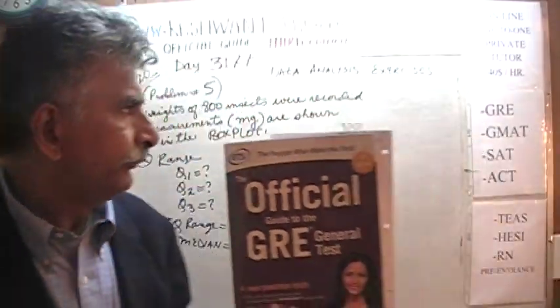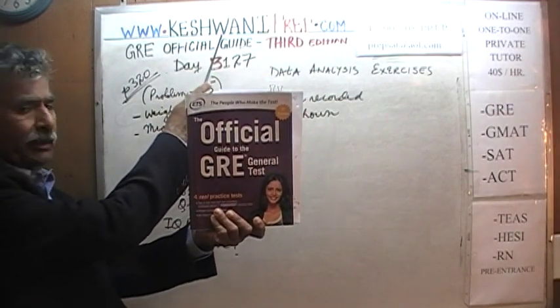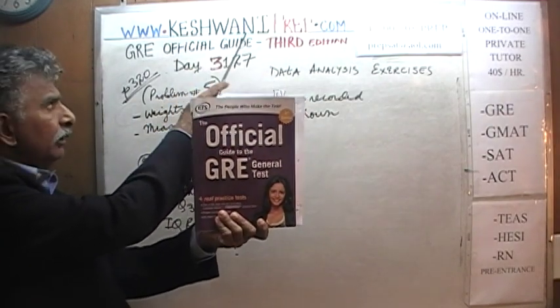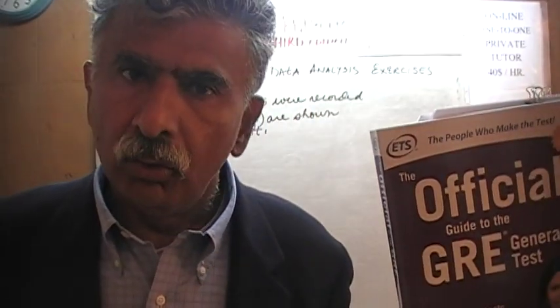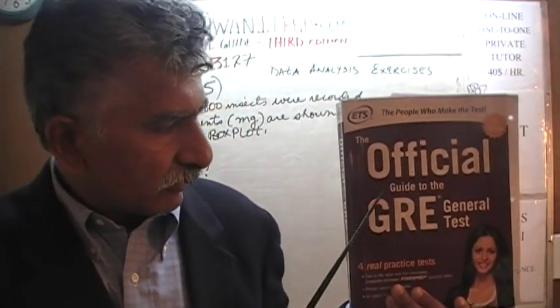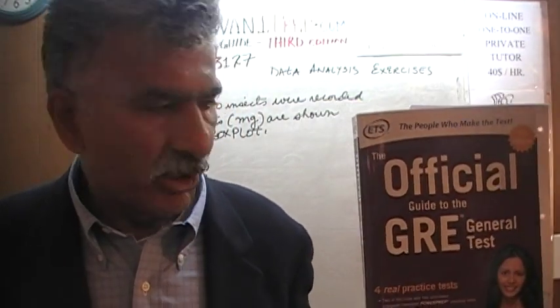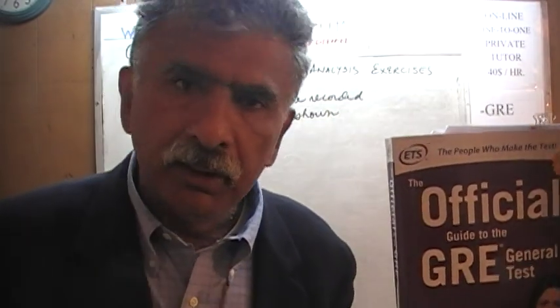Hello, my name is Keshwani — that's K-E-S-H-W-A-N-I, Keshwani. We are here because we want to prepare for the GRE. We have been solving math problems out of this book, the official guide to the GRE, the third edition. If you do not own this book already, purchase one immediately. You are going to need it.